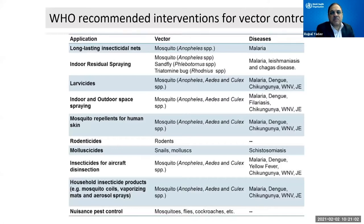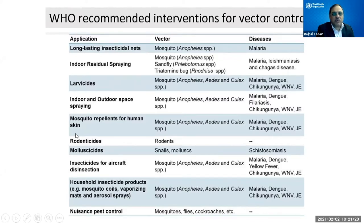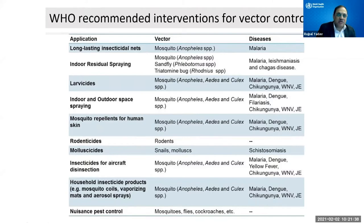WHO has recommended several interventions for vector control — not just products, but applications including LLINs, IRS, larviciding, indoor and outdoor space spraying, repellents applied on human skin, rodenticides, molluscicides, insecticides used in aircraft disinsection, and household pest control agents.